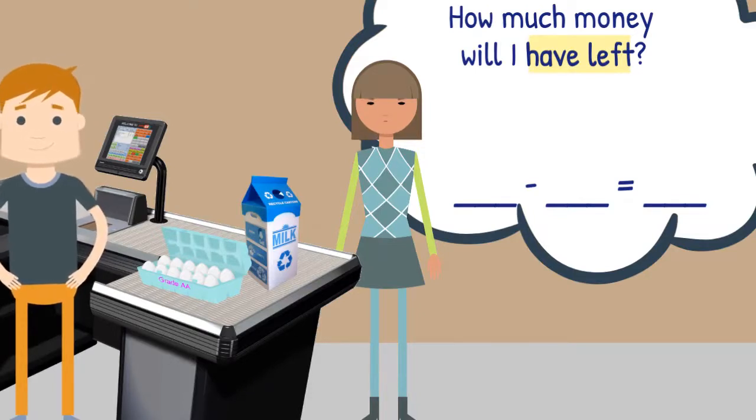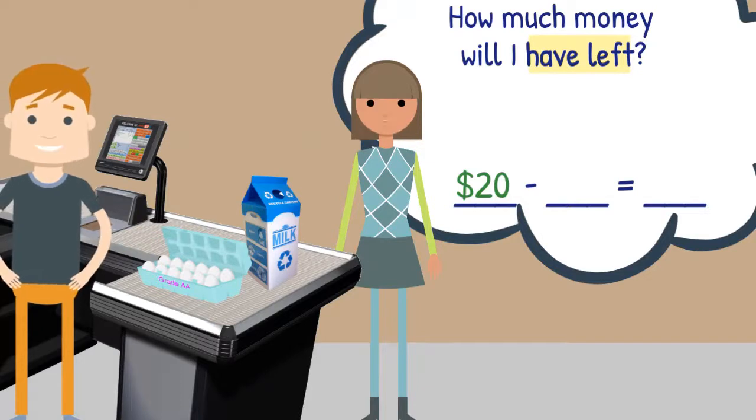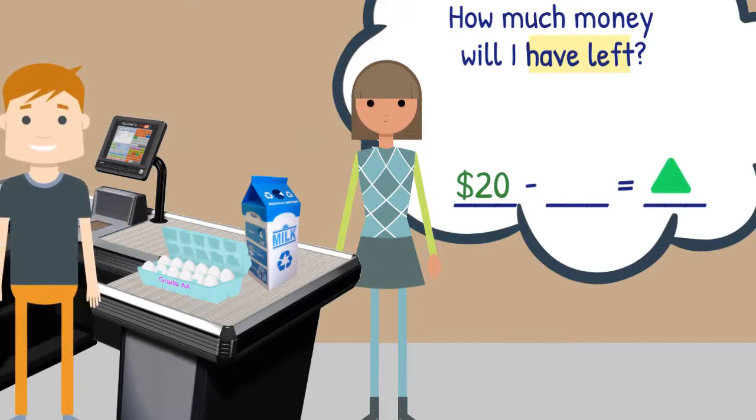First, let's write an equation. We know we are starting with $20, so that number will go here. The missing information is how much money we will have left over after shopping. So we'll use a symbol to show that here.